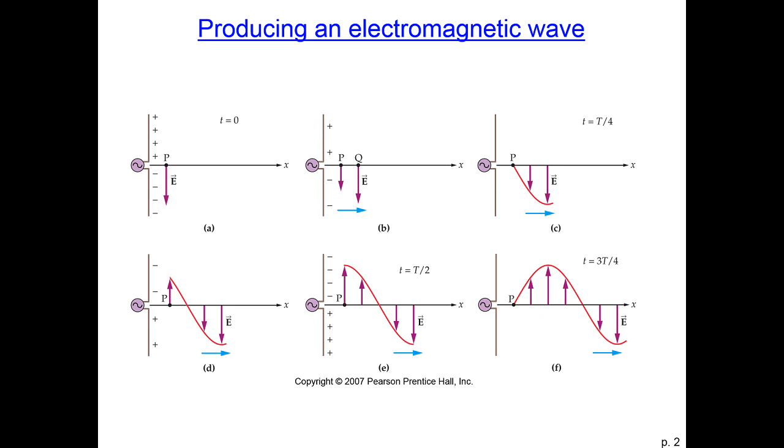The charge at the top of the antenna here is positive, and the charge at the bottom of the antenna is negative. So the electrons have all sloshed to the bottom of the antenna due to the AC source. So because of that, which way does our electric field point? Well, a positive charge will want to move towards the negative charges, so the electric field will point down.